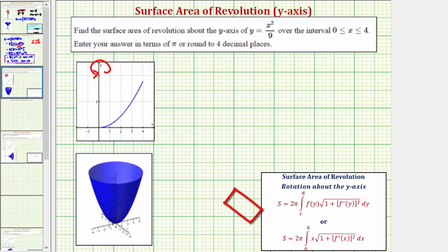Remember, f of y is equal to x, so both of these give us the distance from the curve to the axis of rotation. For example, if we consider this horizontal distance here, we know this horizontal distance is equal to x, which also equals f of y.